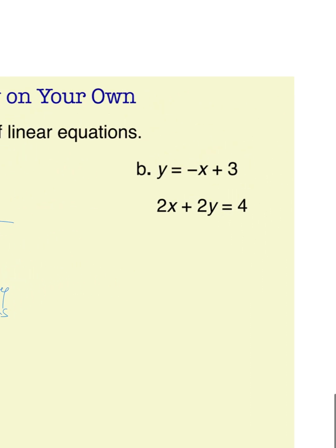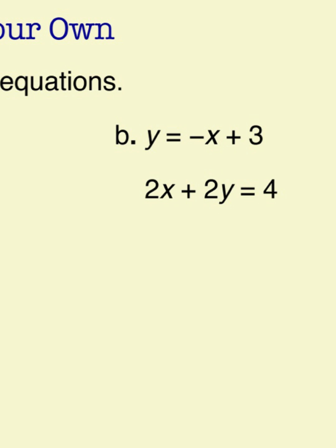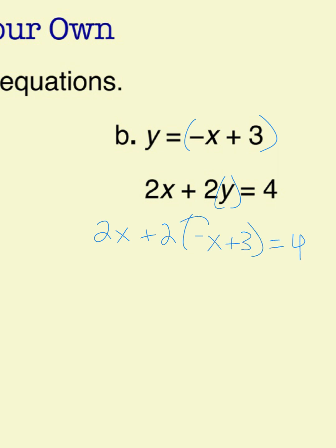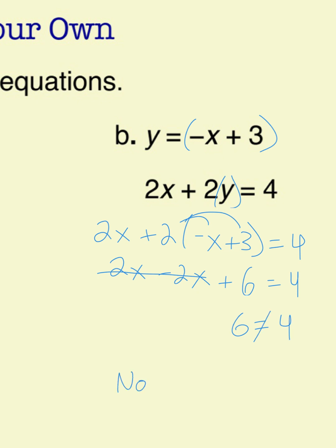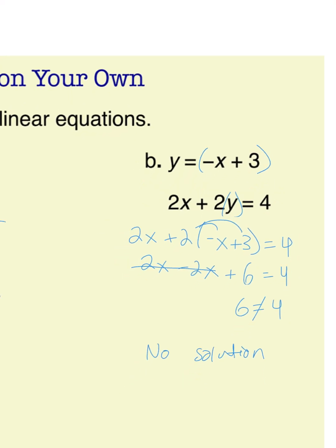For problem B, it's set up nicely for substitution. We substitute negative x plus 3 in for y to get 2x plus 2(negative x plus 3) equals 4. Distributing the 2 gives 2x minus 2x plus 6 equals 4. The x terms cancel out, leaving 6 equals 4, which we know is not true. So this system has no solution. You might have solved that by graphing and found the lines are parallel, but either way, a false statement means no solution — you are correct.